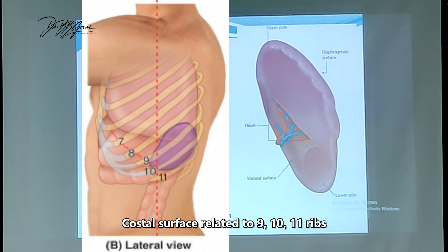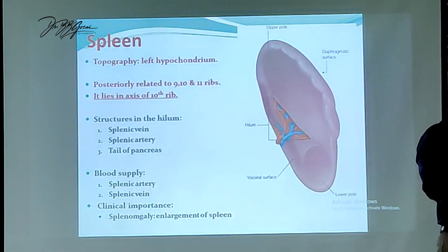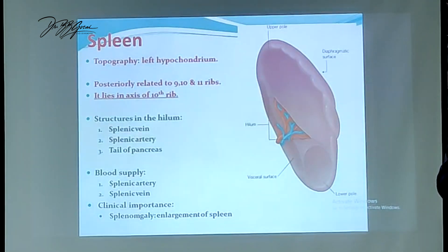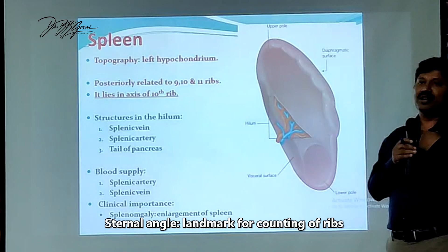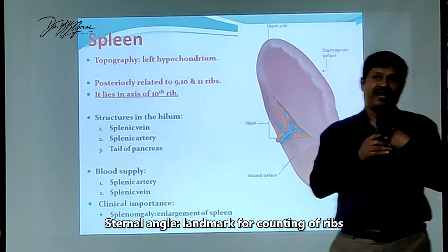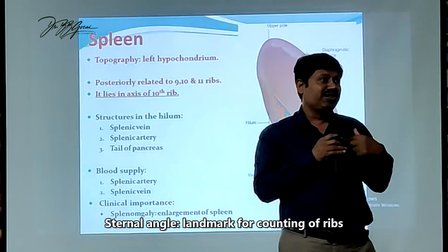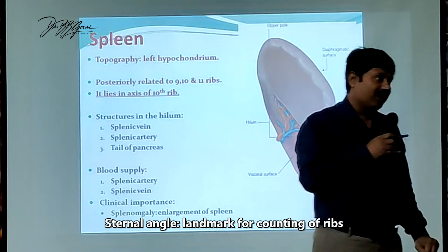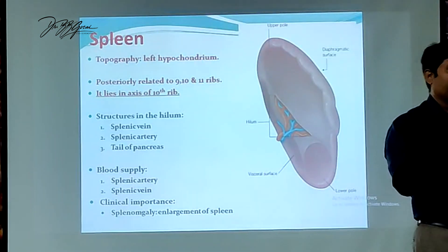So how do you count the ribs? From the second intercostal space at the level of the manubriosternal joint, you will identify the second rib. From the second rib you count, and you will get the numbers. So we will count the 9th, 10th and 11th ribs.